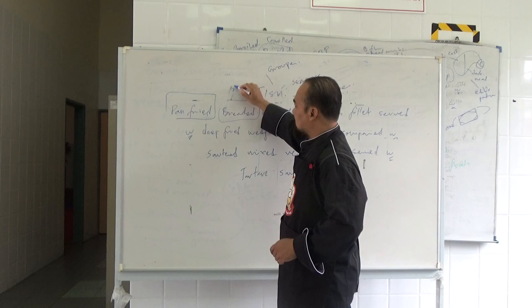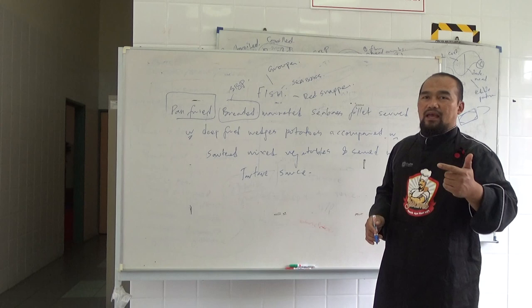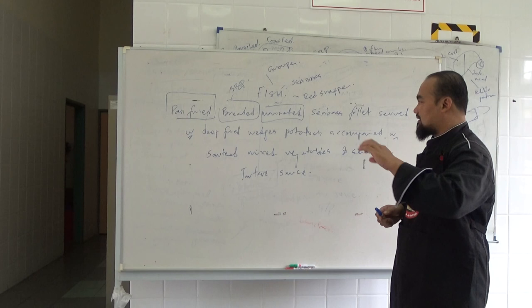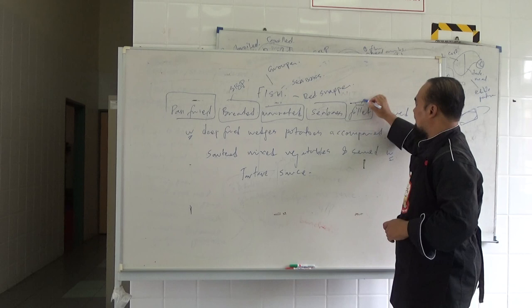Flour, eggs, and then marinate with salt and pepper, and we have paprika as well, and we sprinkle with paprika, and then the sea bass, we need to do the fillet.